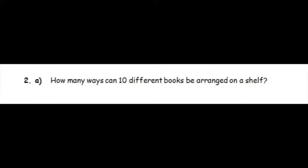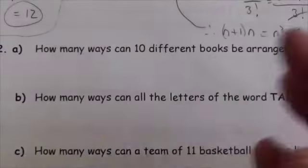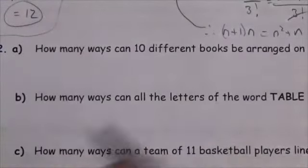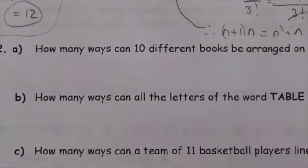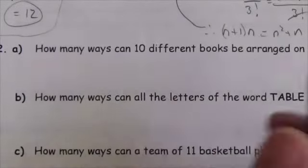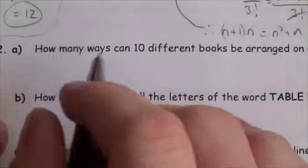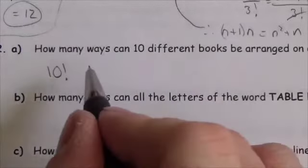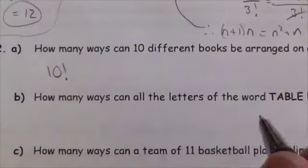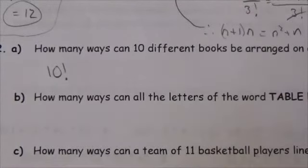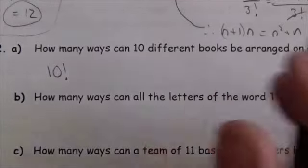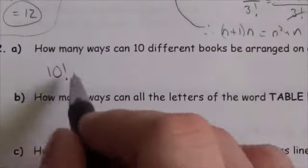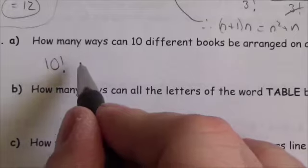Applied problem: how many ways can 10 different books be arranged on a shelf? This is essentially asking how many ways can you permute 10 objects. The answer is 10 factorial, and in many cases that alone suffices as the answer — it communicates exactly what we want.